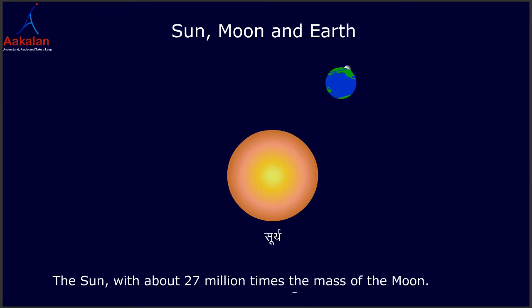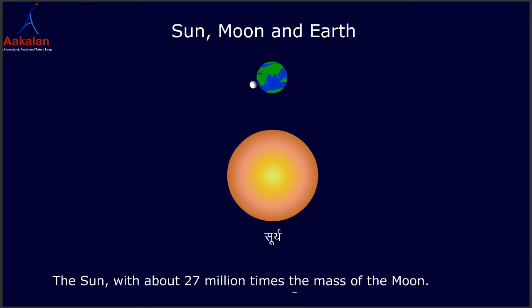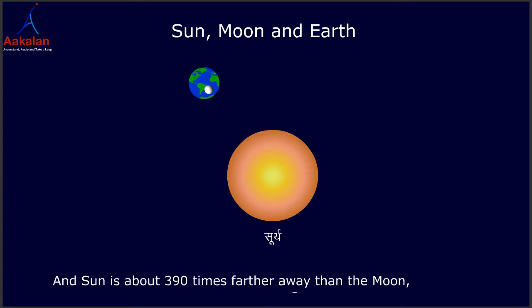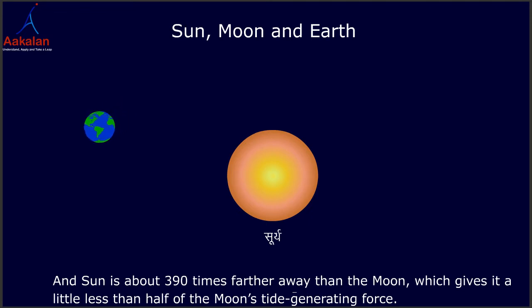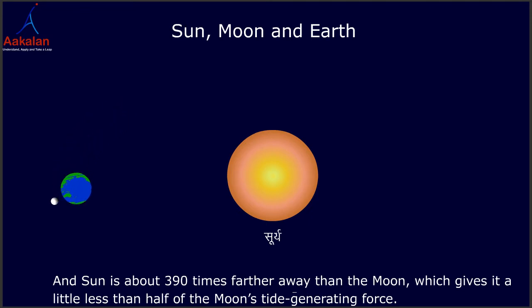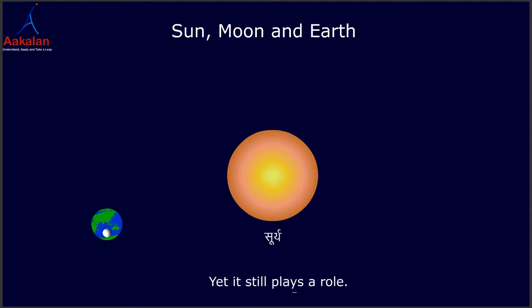The Sun, with about 27 million times the mass of the Moon, is about 390 times farther away than the Moon, which gives it a little less than half of the Moon's tide-generating force. Yet it still plays a role.